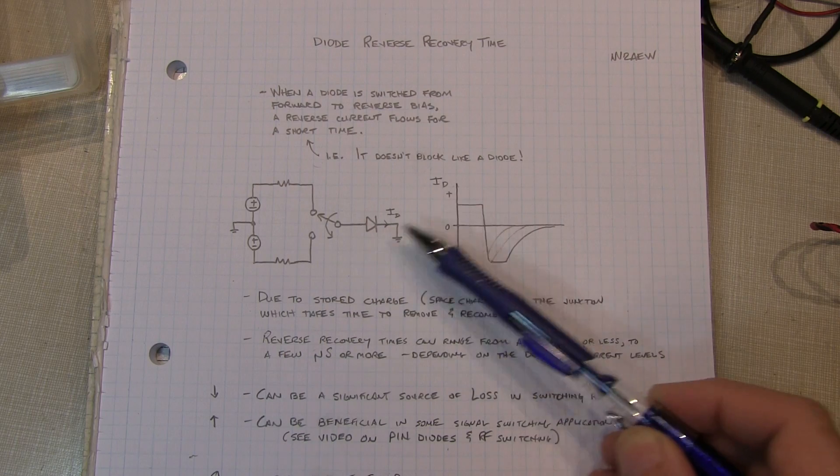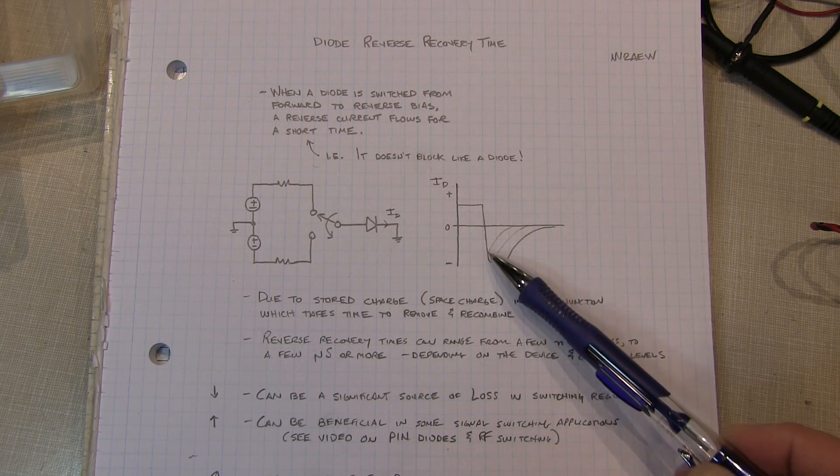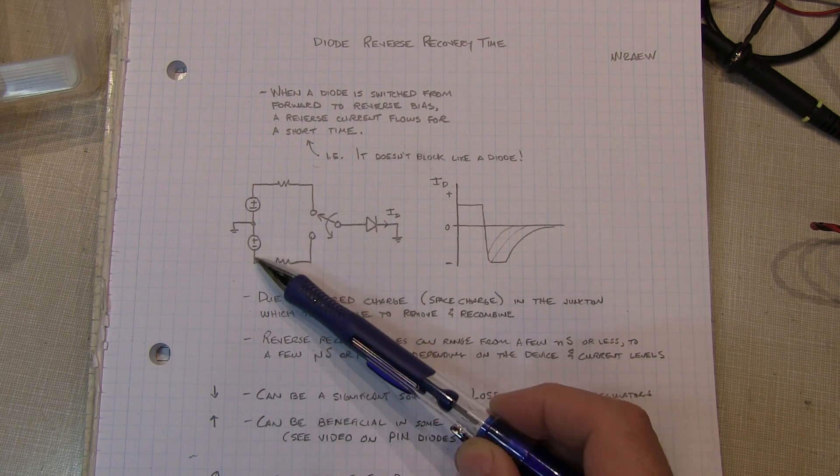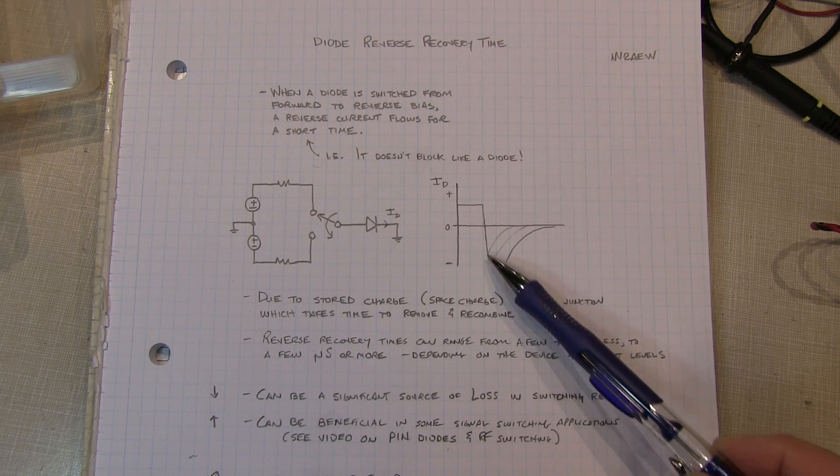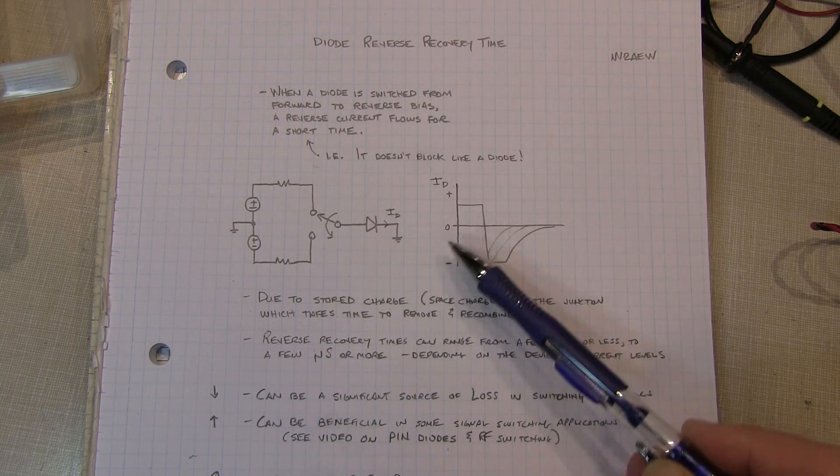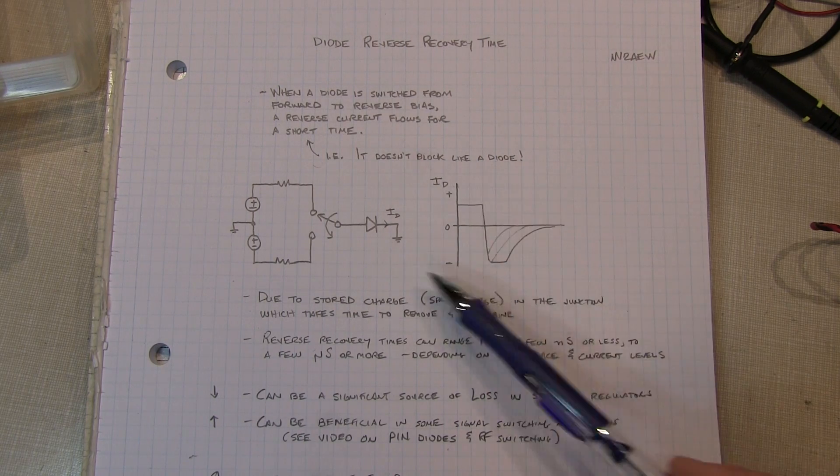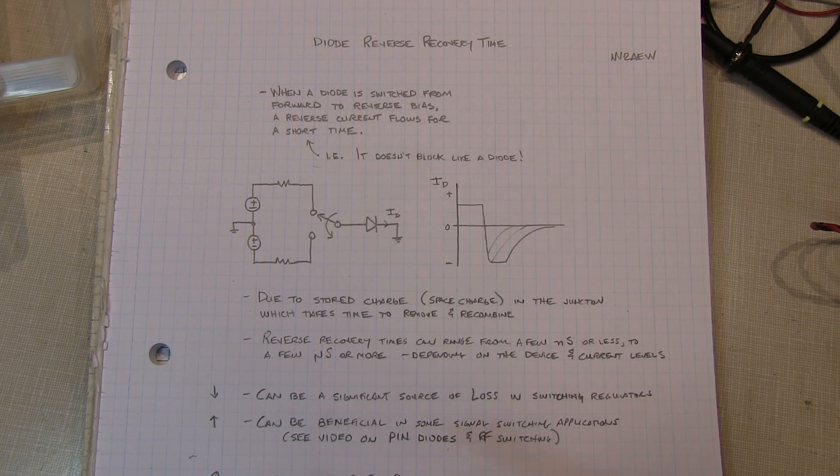And that's true, but not instantaneously. What happens is that there's a reverse current that flows. Sometimes it can go down and be current limited by the voltage and the resistor. Sometimes it might just pop down and then recover back. So you actually get this reverse current that flows where the diode doesn't block like a diode for a short period of time.